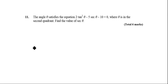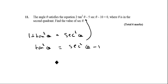So let's say that 1 plus tan squared θ is equal to sec squared θ. Therefore, tan squared θ is sec squared θ minus 1. And now I've got that, I can put that into this equation here. So I'm going to end up with 2 bracket sec squared θ minus 1 bracket minus 5 sec θ minus 10 is equal to 0.